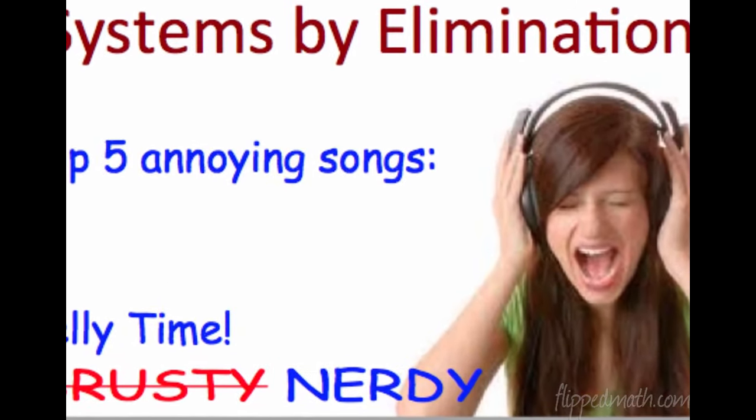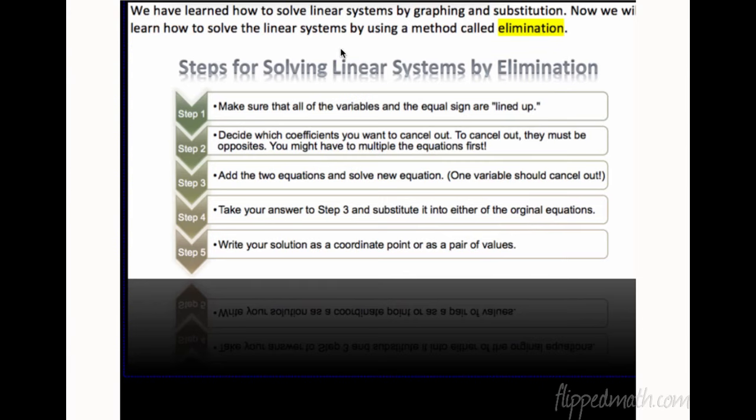So what are the steps to elimination? Here are the steps involved in solving systems with elimination. First, you have to make sure that all the variables are lined up. That means the x is over the x, the y is over the y, the equal signs over the equal sign. That is very important.